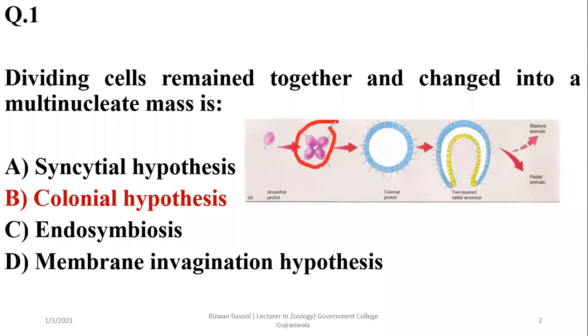Colonial hypothesis describes a two-layered ancestor developing from colonial cells. While syncytial hypothesis states that a multi-nucleate mass developed first, just like the pattern of schizogony or multiple fission, and that multi-nucleate mass later developed cell membranes around it and became a multicellular organism.